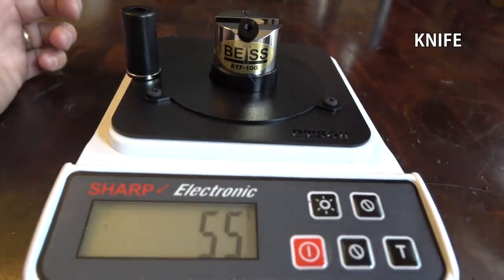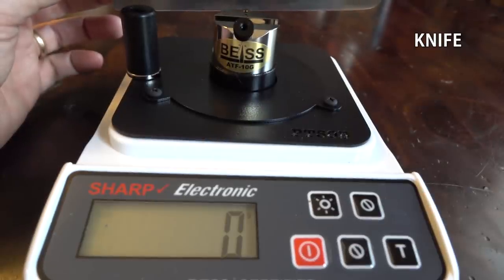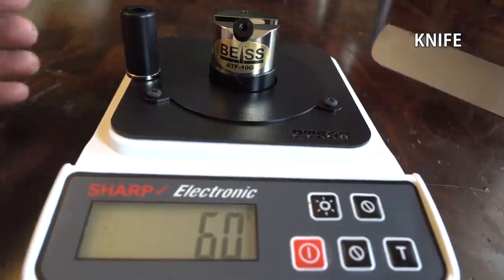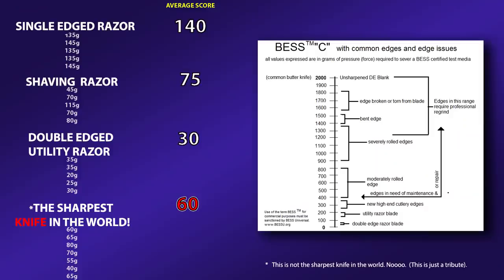Now, this Sharpness Tester measures in increments of five. So 5, 10, 15, 20. There's a more expensive one that goes in increments of one gram. And then a less expensive one that goes in 50 gram increments. All right. These are the results. The single-edged razor did 140. Shaving razor, 75. Double-edged utility razor averaged 30. I did some extra testing on the knife there, and it averaged about 60 or 62. I'm just rounding it to fives because that's what the tester tests in.